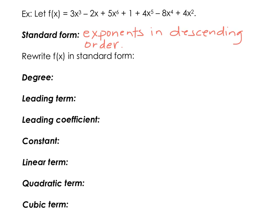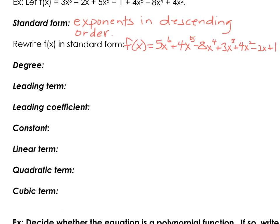In our first example, f of x equals 3x cubed minus 2x plus 5x to the 6th plus 1 plus 4x to the 5th minus 8x to the 4th plus 4x squared. That's definitely a polynomial — many terms. Standard form is when all of the exponents are in descending order, writing the term with the biggest exponent first, all the way down to the constant. Rewriting in standard form: f of x equals 5x to the 6th plus 4x to the 5th minus 8x to the 4th plus 3x cubed plus 4x squared minus 2x plus 1.